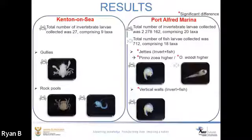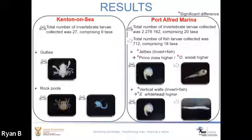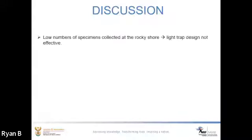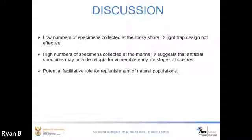There were significant differences between the jetties and vertical walls across months for invertebrate and fish larvae, with the zoea of Pinnotheridae species being the most abundant taxon collected at both habitats, making up over 90% of the total invertebrate larvae collected. Pinnotheridae zoea were significantly higher at the jetties compared to the vertical walls. For fish larvae, the pre-flexion stage of the blenny Omobranchus woodi was significantly higher at the jetties, and the post-flexion stage of Halichoeres whitheadae significantly higher at the vertical walls. Low numbers at Kenton could be attributed to the design of light traps — traps were often badly damaged due to exposure to high wave energy and in certain instances were completely lost.